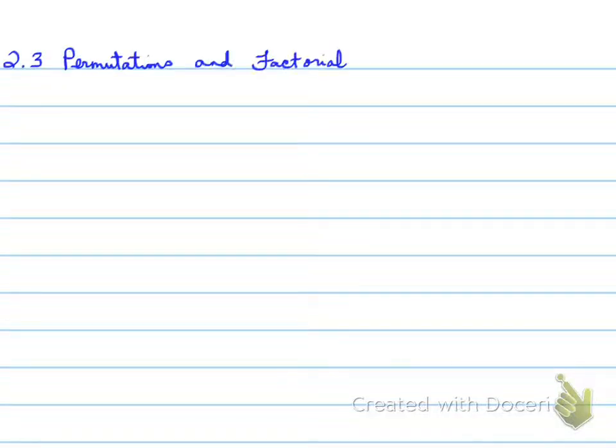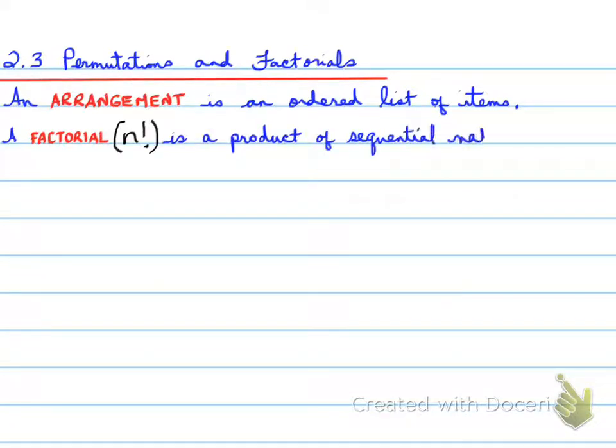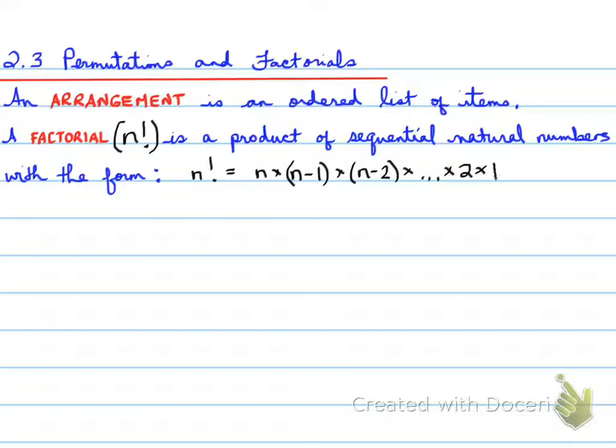Looking at 2.3, permutations and factorials. An arrangement is an ordered list of items. A factorial, n factorial, n with an exclamation mark, is a product of sequential natural numbers with the form n factorial equals n times n minus 1 times n minus 2 times all the way down till you get to times 1.